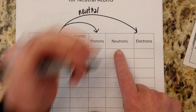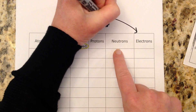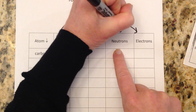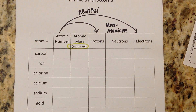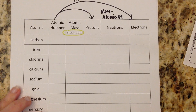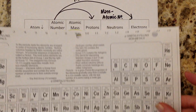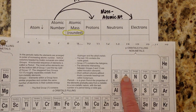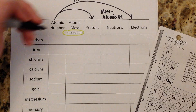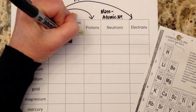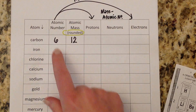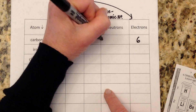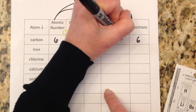For the number of neutrons, we're going to say mass minus atomic number, and that's all we do. So let's start with carbon — carbon has an atomic number of 6 and a mass of 12.01. We're going to put 6 for the atomic number and round that mass to 12. Because carbon has an atomic number of 6, it has 6 protons and 6 electrons. Mass minus atomic number gives us 12 minus 6, so we also have 6 neutrons.